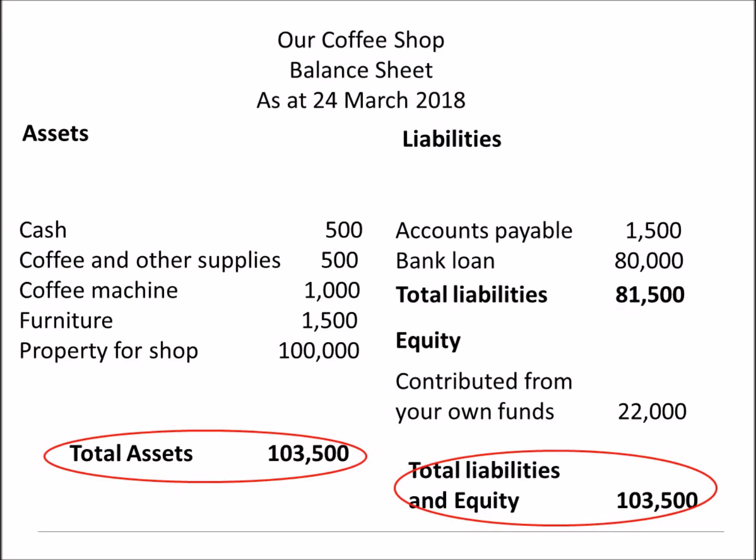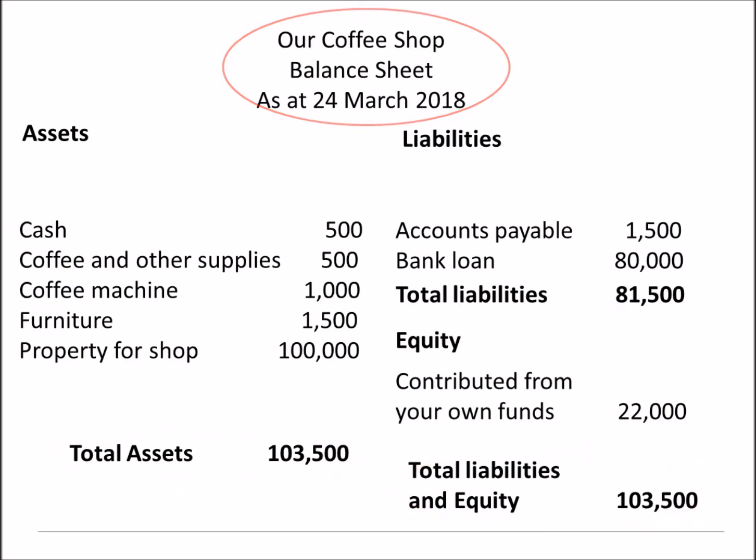What we have just created is the balance sheet for our coffee shop. All statements must have a heading, otherwise they are meaningless. It must include the name of the business, the type of statement, and the date. In this case it is 'as at' a particular date because it shows the position of our business on that day — it is a snapshot in time. Tomorrow we may have sold some coffee, so our financial position changes as we'll have more cash and less coffee.